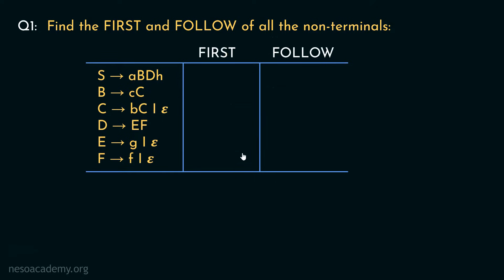Since we are starting off with First of all the non-terminals, we will start with the last non-terminal. The production rule is: F can be rewritten as lowercase f or epsilon. Therefore, in the First of F, we will have the symbols lowercase f and epsilon.